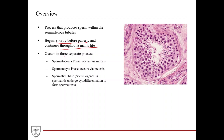Spermatogenesis occurs in three separate phases. You have the spermatogonia phase, which occurs via mitosis. Then you have the spermatocyte phase, which occurs via meiosis. And then you have the spermatid phase, also known as spermiogenesis, which is where the spermatids undergo cytodifferentiation to form spermatozoa.